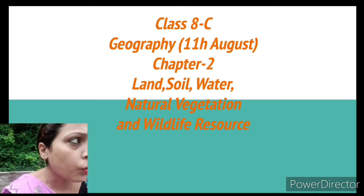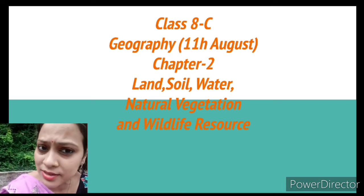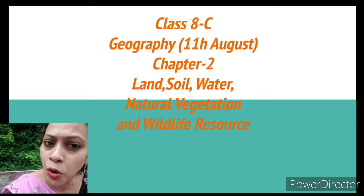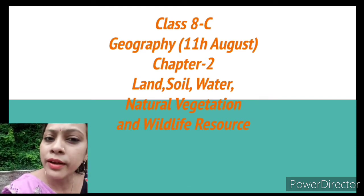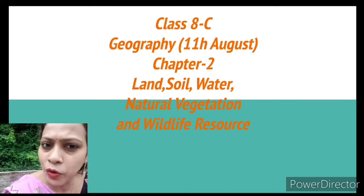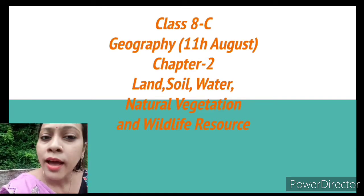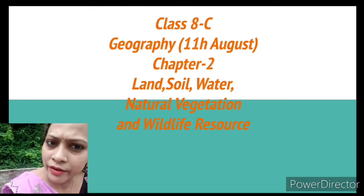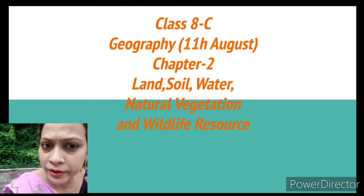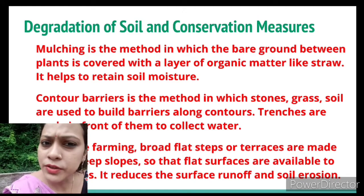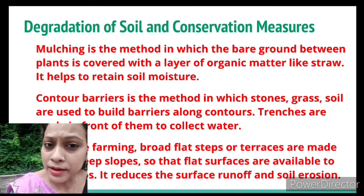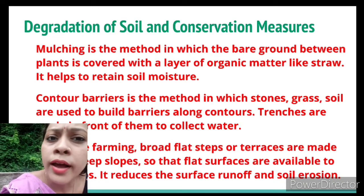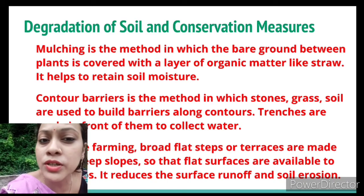Since soil is degrading due to over-utilization, we must conserve it. There are some methods to stop soil degradation. Two of them are mulching and contour barriers. Mulching means growing some organic matter like straw in between plants on barren or empty land.